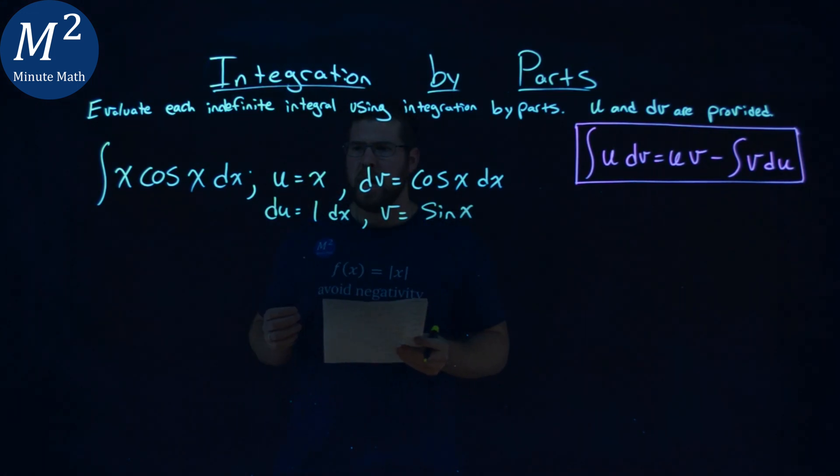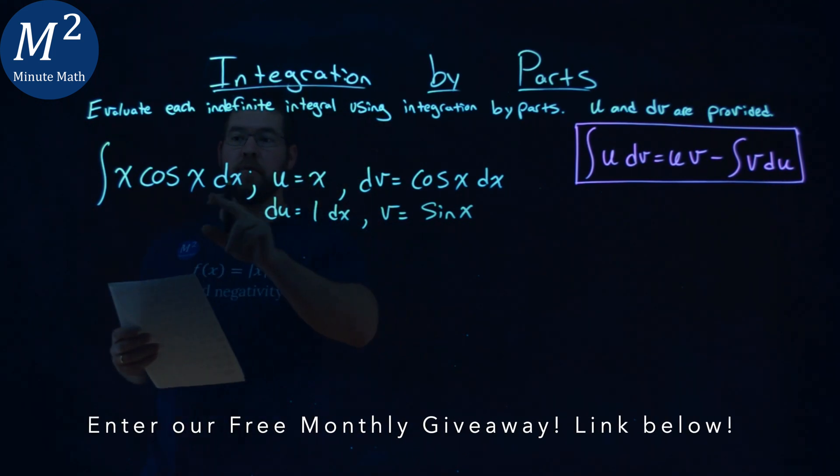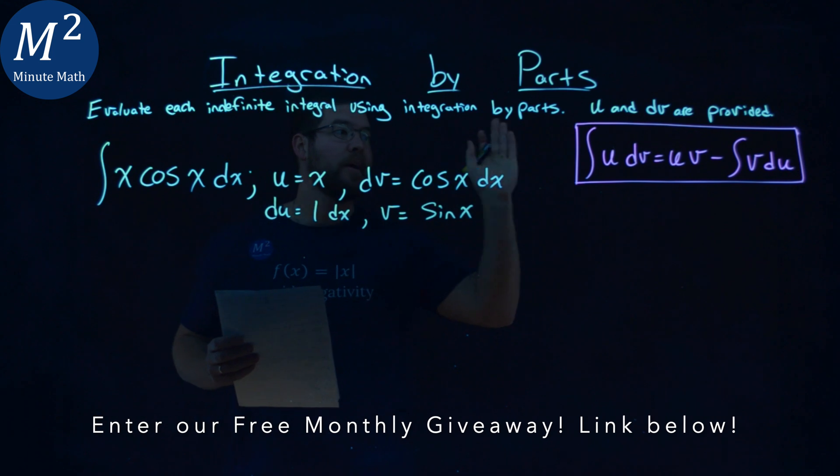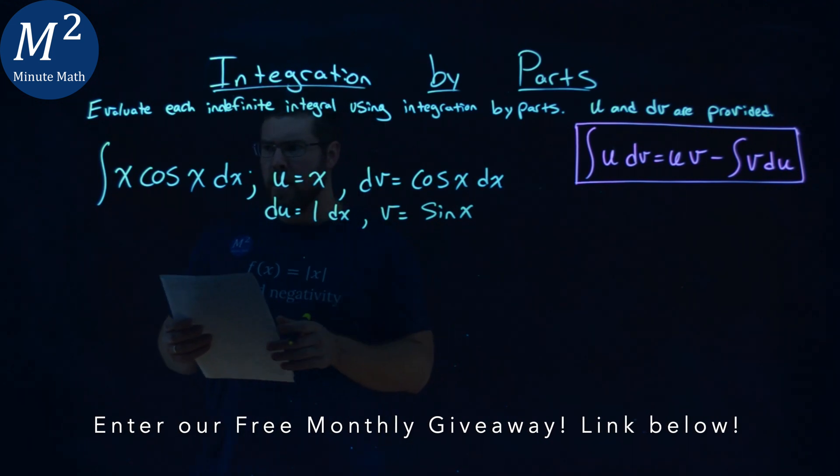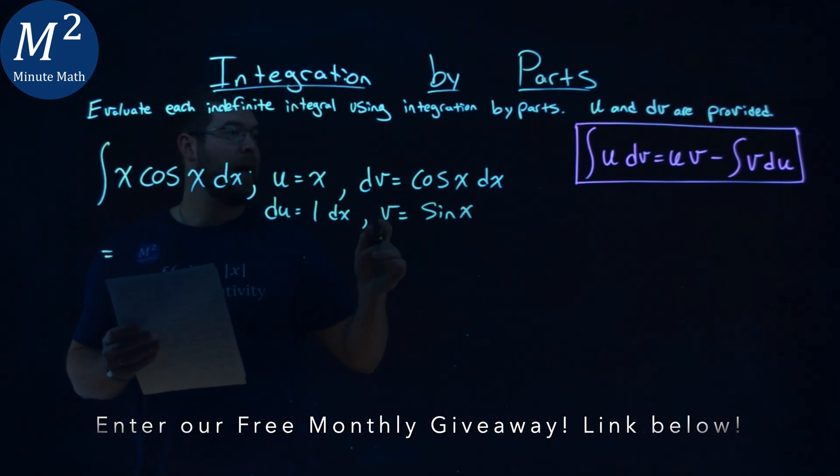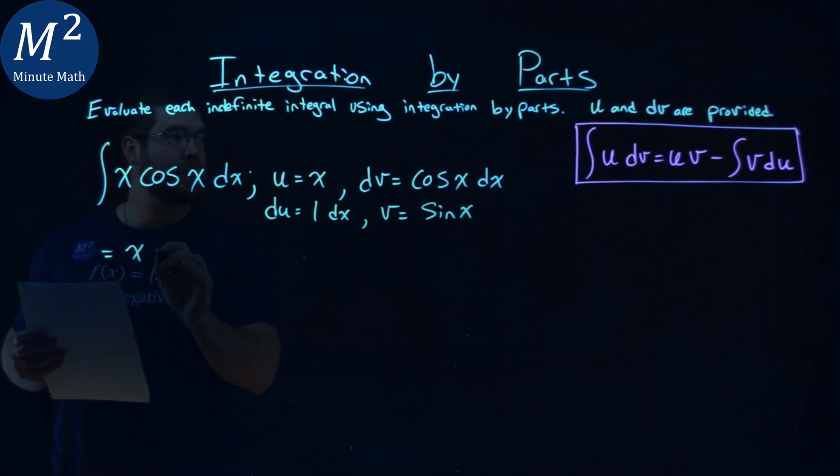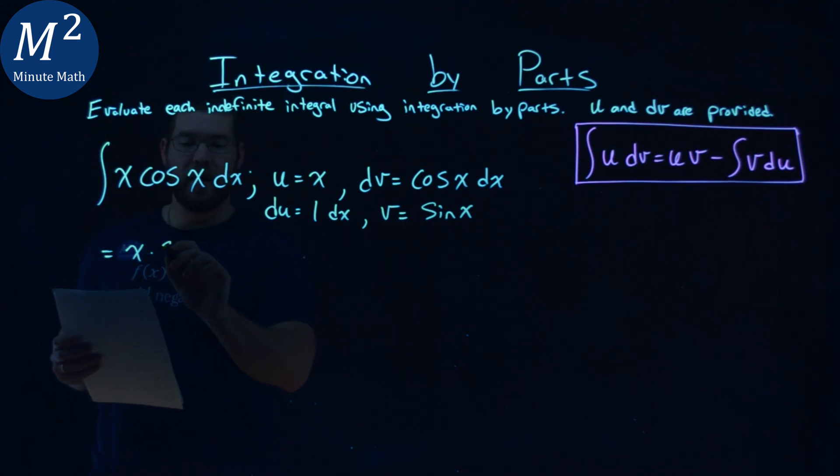Now from here, we're going to apply our formula. Our u value is x, and cosine x dx is our dv. So we have it all lined up—u, which is x, times our v value, which is sine of x,